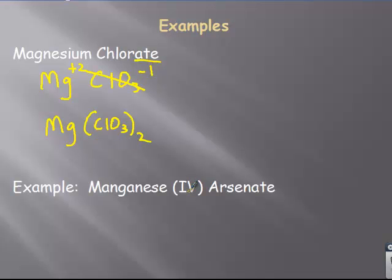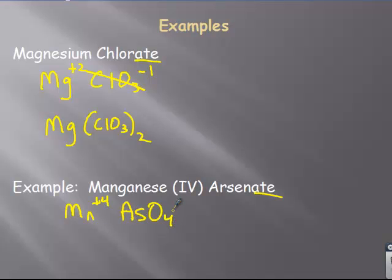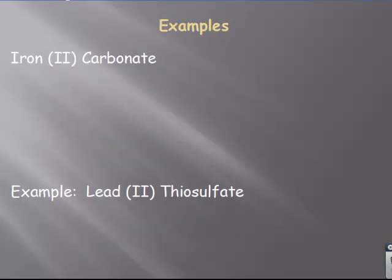Next one. Now, manganese four. So, Mn with a plus four. Arsenate, not arsenide. Arsenate is down here. All right. AsO4 with a minus three. AsO4 with a minus three. So, we're crossing a three that way and a four that way. Mn gets a three. AsO4 gets a four. Now, the way we would read this is Mn3, AsO4, parentheses four. So, that's when we, this one up here would be Mg, ClO3, parentheses two. So, if I were to read those out to somebody, that's the proper way to do that.